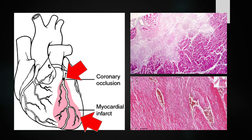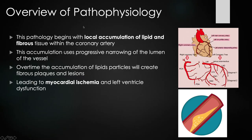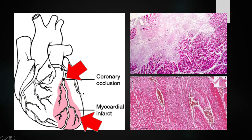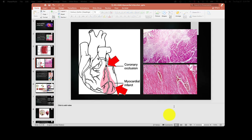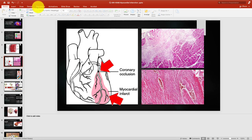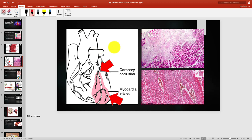Thrombus — T-H-R-O-M-B-U-S. Let's have a little fun and draw this. If we have a vessel, we're looking at the lumen of the vessel — the inside. When we start to develop atherosclerosis, we start to get plaque building up. Let me change the color because plaque is generally yellow. This plaque starts to protrude into the vessel.